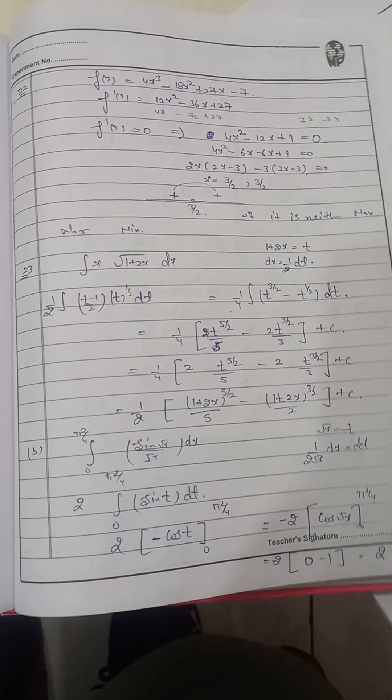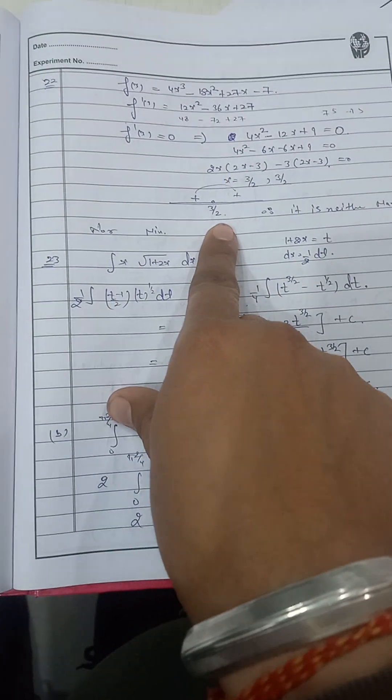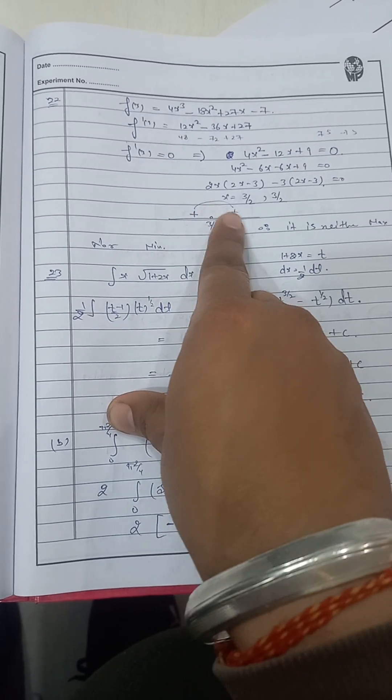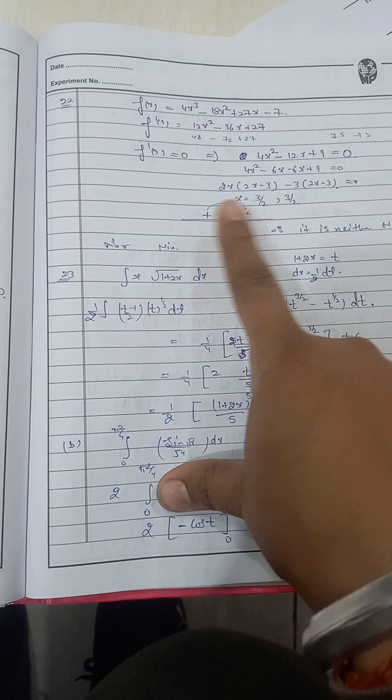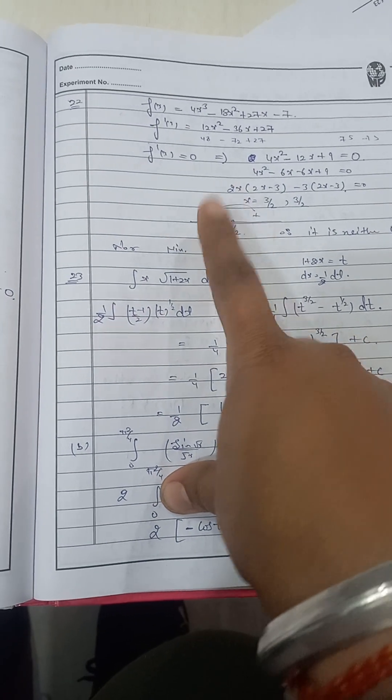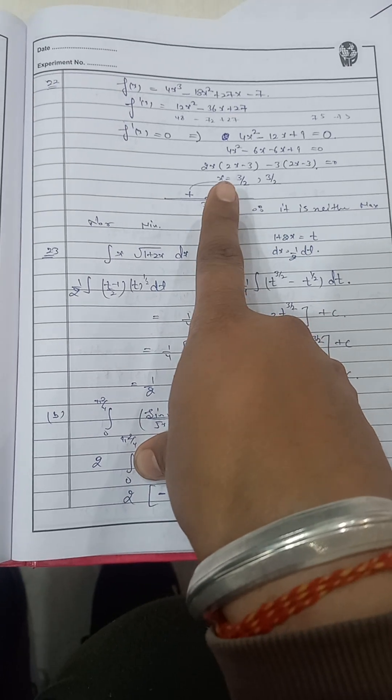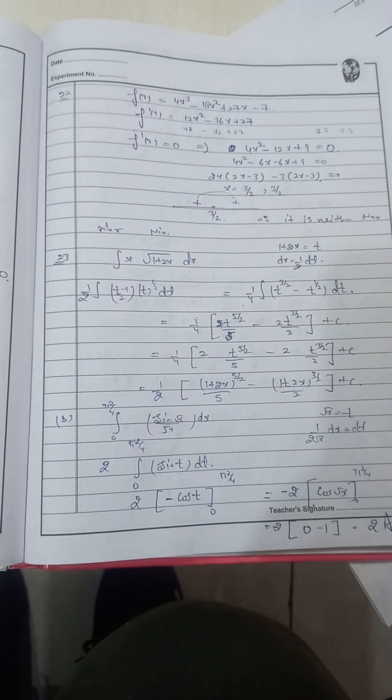So you can see here, from here we may know about this question that we are here positive sign with positive sign here also a positive sign. It means positive to positive. When we move positive to positive, negative to negative, it tell us that function is having neither minima nor maximum value.